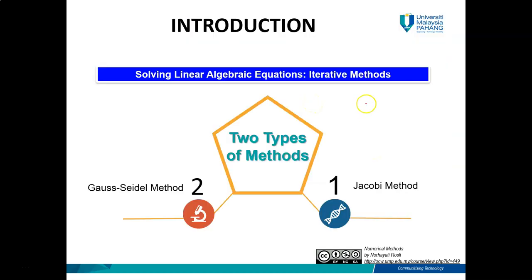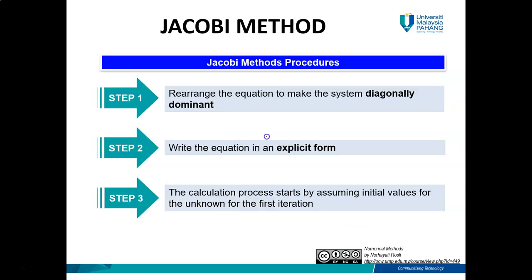In this first video, I will cover how to solve linear algebraic equations using the Jacobi method, and then we will move on to the Gauss-Seidel method. In the Jacobi method, the following steps are involved. Step number one: you need to rearrange the equation to make the system diagonally dominant, then write the equation in explicit form. The calculation process starts by assuming initial values of the unknowns for the first iteration.